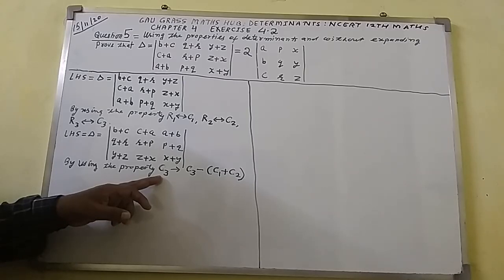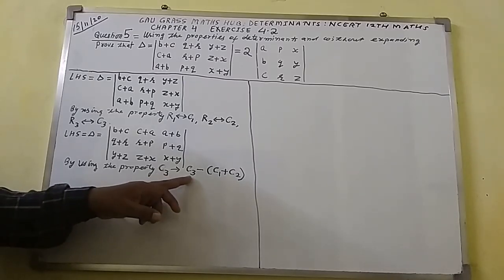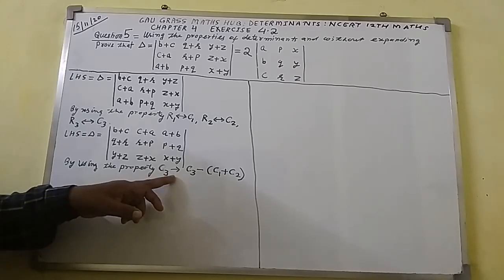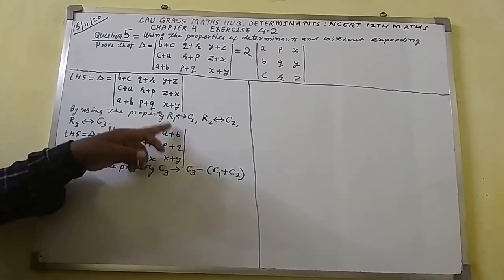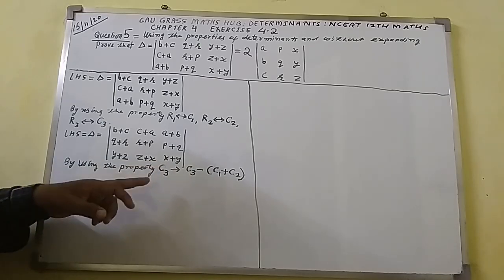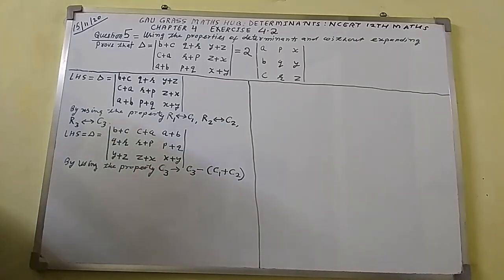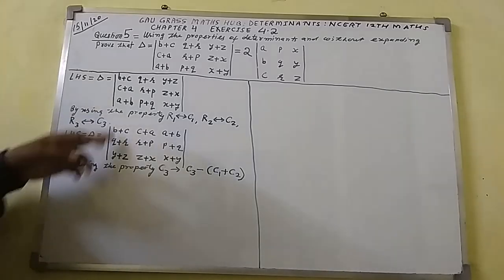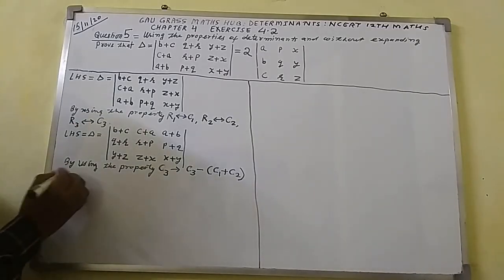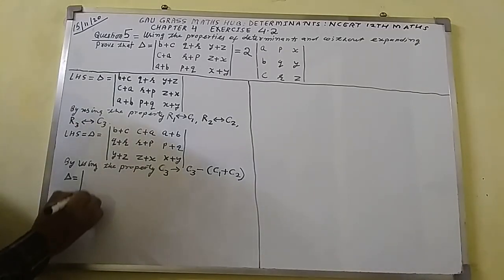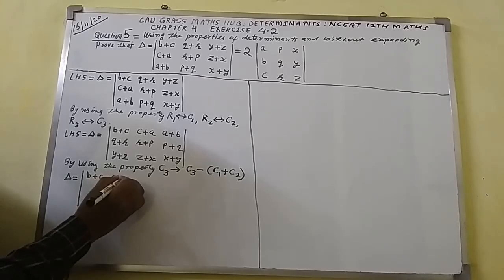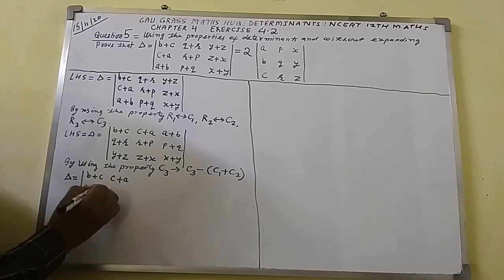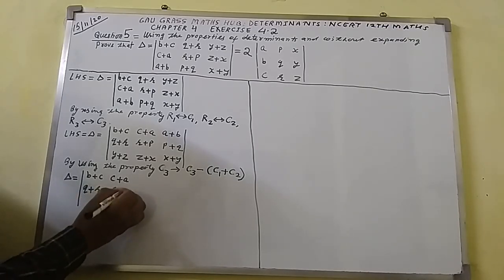C3 goes to C3 minus (C1 plus C2). This means that changes will occur only in the third column. There will be no changes in the first column and second column. So I shall write the first column and second column as they are: B plus C, C plus A; Q plus R, R plus P; Y plus Z, Z plus X.